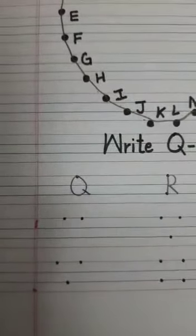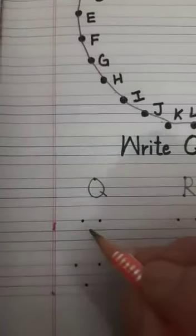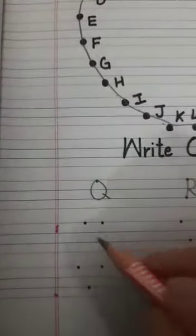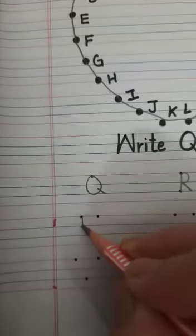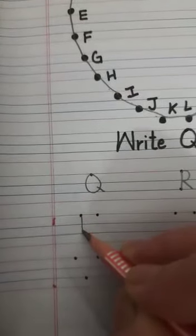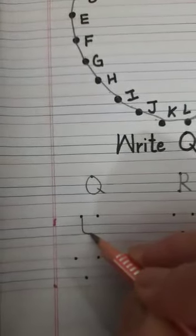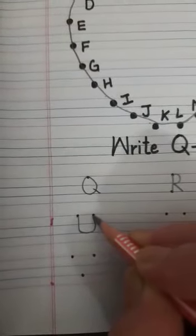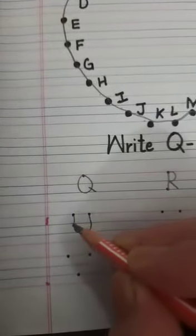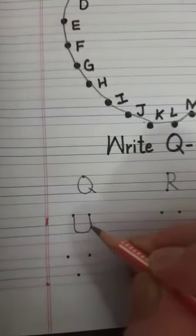Then what comes after T, children? It is U. Make a standing line. Then from here slightly turn. Touch the blue line. Second blue line. And now up. This is letter U.